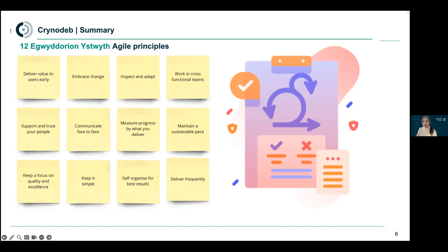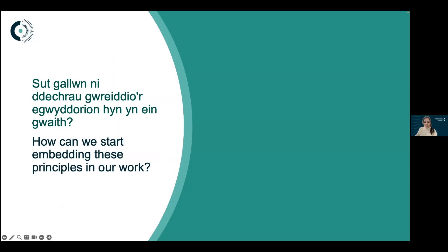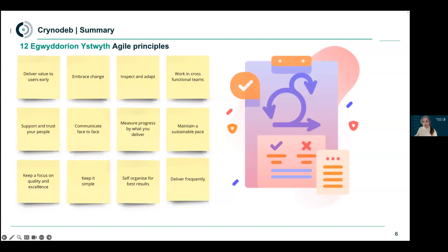One principle is to deliver value to users early, which is also part of the manifesto when we're talking about getting a working product into people's hands. If we deliver value to users early, it ensures we're delivering the right thing and heading in the right direction. The next principle that the Agile delivery framework helps with is delivering frequently, which ultimately helps us to continuously improve not just our products and services, but our way of working.